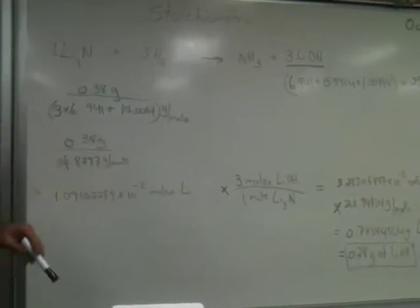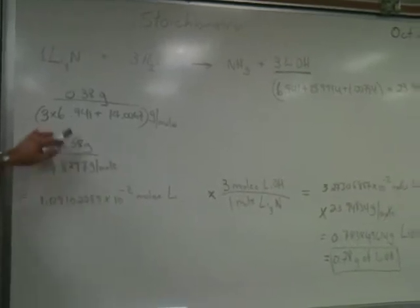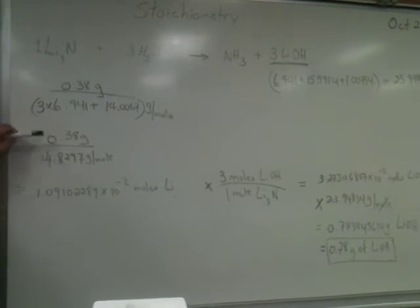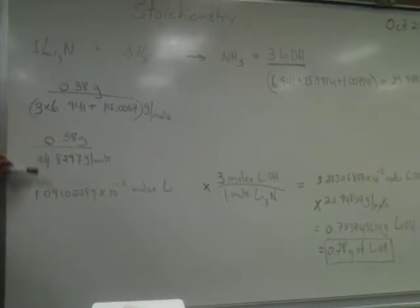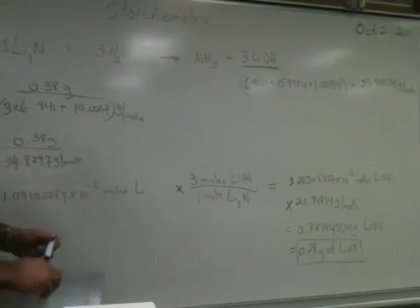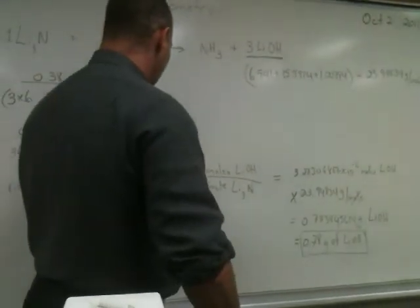I retain all the decimal places while I'm doing the calculation. I keep all these numbers in my calculator. I don't round during the calculation. 0.38 divided by 34.8 gives you this number, and that's how many moles of lithium nitrite are being reacted.